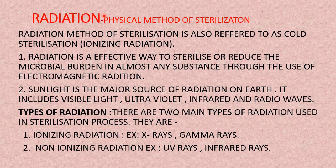The radiation method of sterilization is also referred to as cold sterilization — especially ionizing radiations are considered cold sterilization. Radiation is an effective way to sterilize or reduce microbial burden in almost any substance through the use of electromagnetic radiation, and it is mainly used in the food industry. Sunlight is a natural source of radiation on Earth.